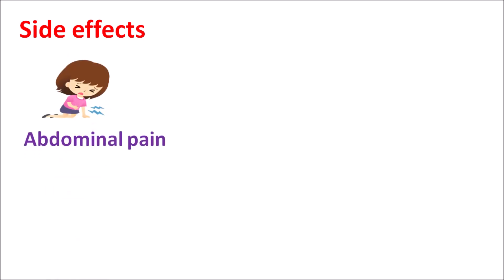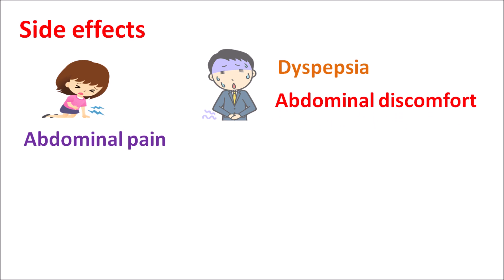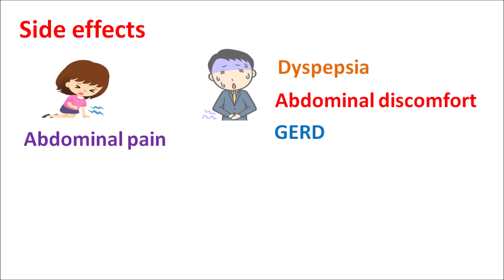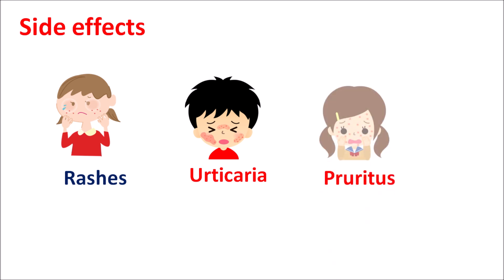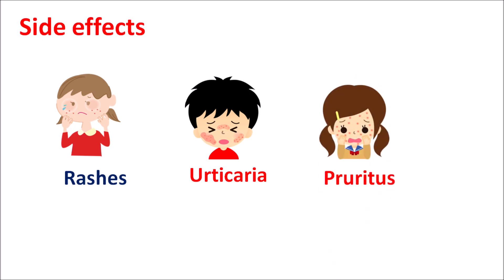The important side effects are mainly related to the gastrointestinal system. This drug may produce abdominal pain, dyspepsia, abdominal discomfort, GERD (gastroesophageal reflux disorder), esophagitis, erosive gastritis, and even gastric hemorrhage. Dabigatran can also produce hypersensitivity reactions like skin rashes, urticaria, and pruritus. It can even induce anaphylactic reactions, and in case of severe anaphylaxis, this drug should not be used.